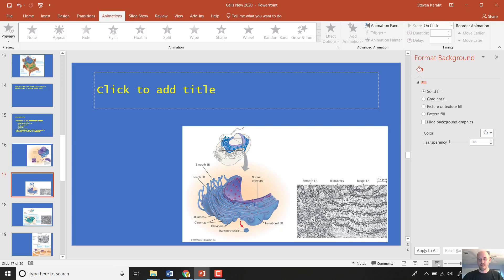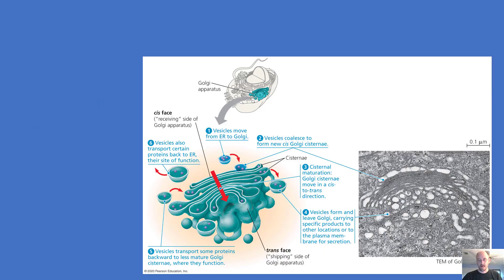Now we've talked about the rough and smooth ER and some of the roles they play. I mentioned that they ship their contents often to the Golgi apparatus. The Golgi apparatus is another organelle that consists of a bunch of membrane.